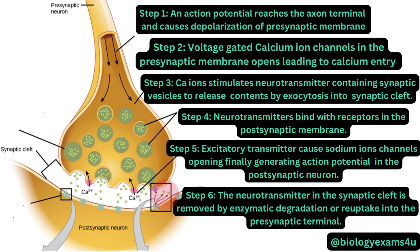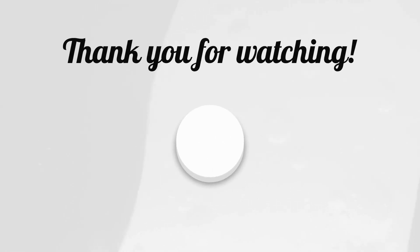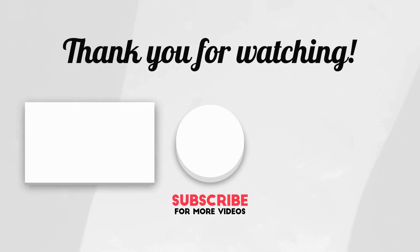If it is an inhibitory transmitter, the neurotransmitter combines with receptors in the postsynaptic membrane, leading to opening of chloride ion channels, which produces hyperpolarization in the postsynaptic membrane. Thus, impulse transmission across the synapse is blocked. Hope you are clear with the steps involved in synaptic transmission.